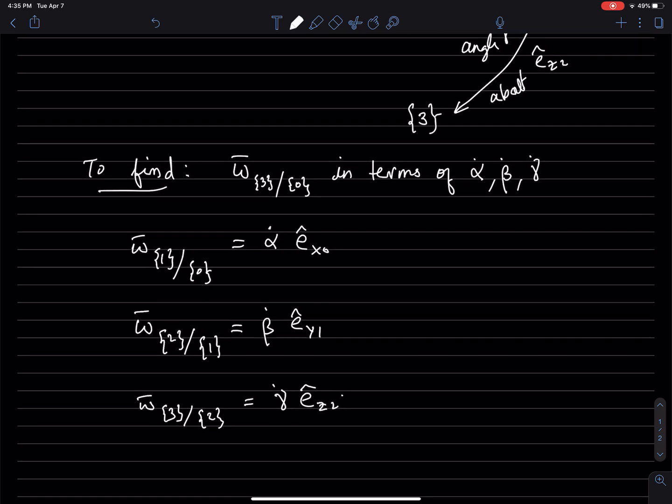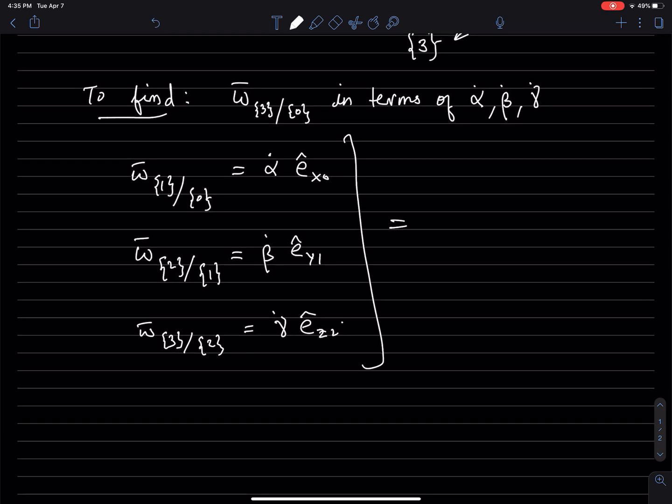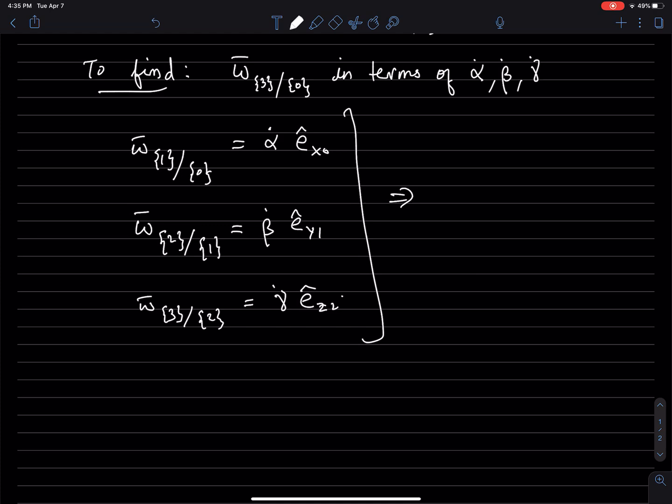And what all this implies is omega 3 with respect to 0 is going to be omega 3 with respect to 2, plus omega 2 with respect to 1, plus omega 1 with respect to 0.